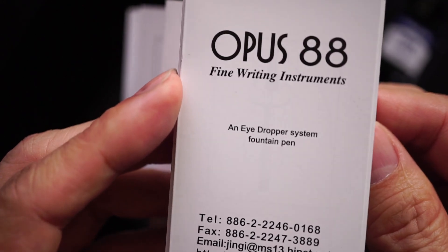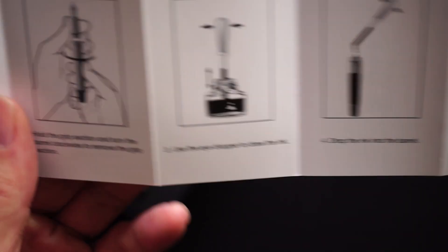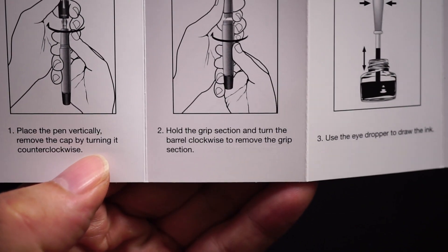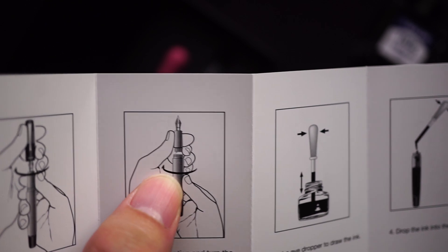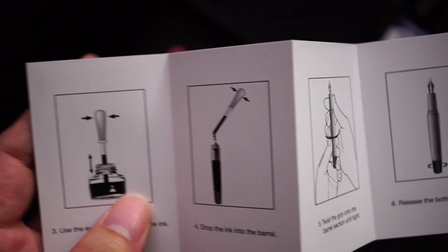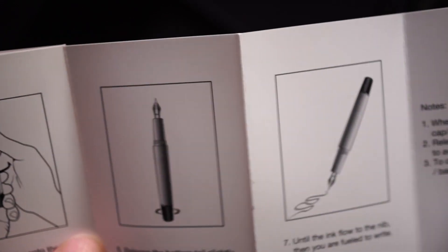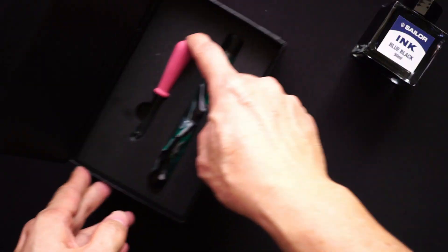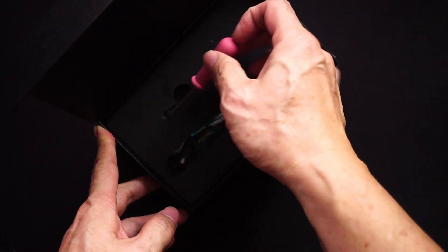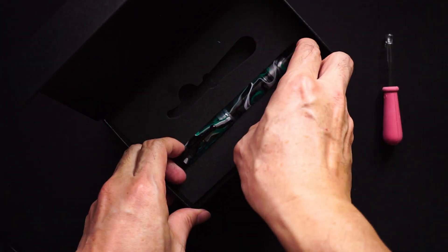So how do you use an eyedropper system? Basically you unscrew the cap, unscrew the middle part of the section and the body, afterwards you use the included eyedropper to fill up the pen. So what the pen comes with would be that eyedropper which was mentioned earlier on and the pen itself.